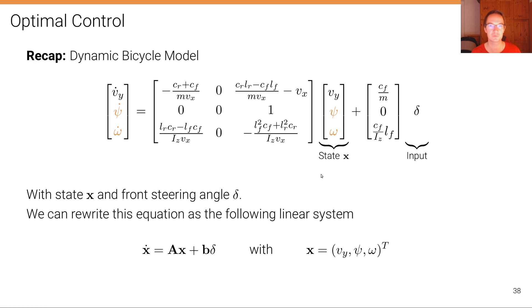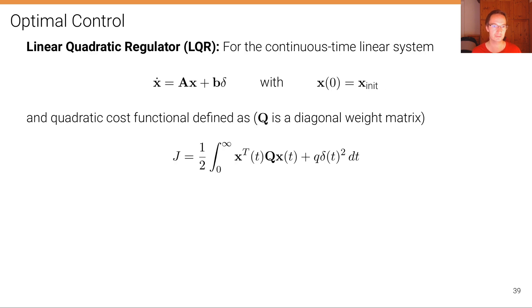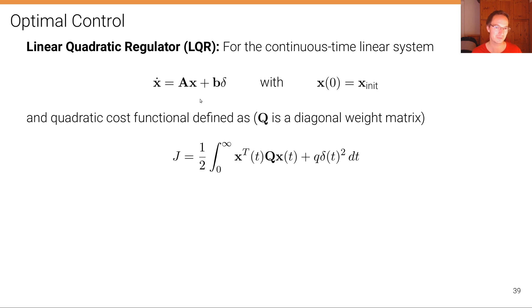Changing from the local coordinate definition to a global coordinate definition makes this system nonlinear, as we discussed in the lecture on the dynamic bicycle model. The LQR is not applicable anymore because it's only applicable to linear systems, but model predictive control can handle this.